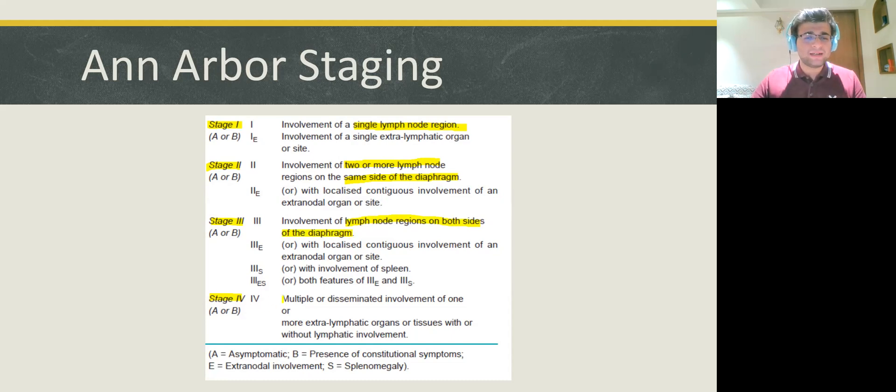Stage 4, we have multiple lymph node regions involvement or a disseminated lymph node region involvement. So, this can also have extra lymphatic organ involvement with or without lymphatic involvement. This is Stage 4. Now, these stages are again classified into A or B.